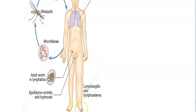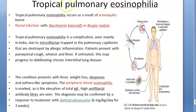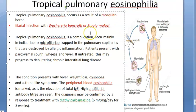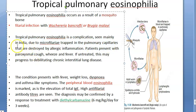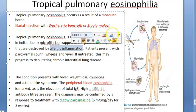Because the microfilaria are sitting in the pulmonary capillaries, this man will get tropical pulmonary eosinophilia. His leg is swollen — that's elephantiasis. To get tropical pulmonary eosinophilia, you must be bitten by a mosquito infected with microfilaria. The pulmonary capillaries are then destroyed by allergic inflammation.